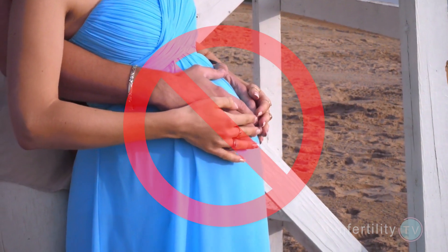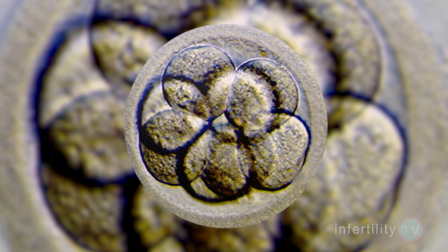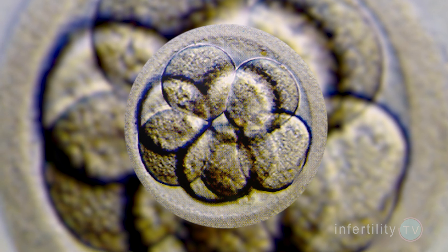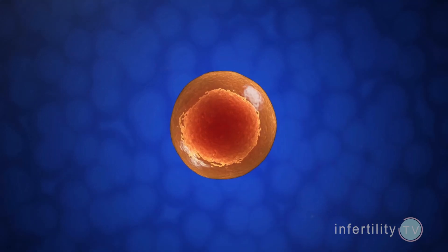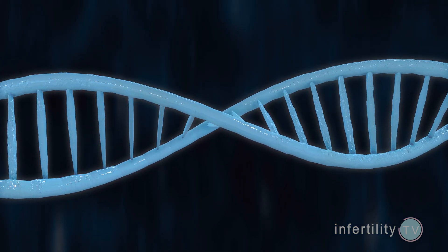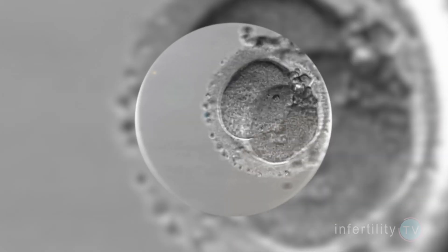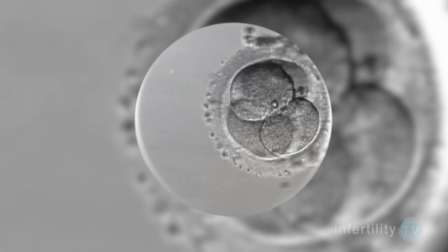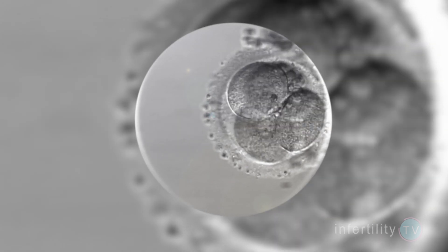Arrested embryos cannot produce a viable pregnancy. Generally, a healthy embryo will divide into eight cells by about the third day after fertilization. A large number of embryos don't develop beyond the eight-cell stage. The reason is important: up until the eight-cell stage, the fertilized egg needs proteins that originated from the egg's genes — the sperm does nothing to contribute to embryo development. If your embryos stop developing before the eight-cell stage, that is an egg problem 100% of the time.